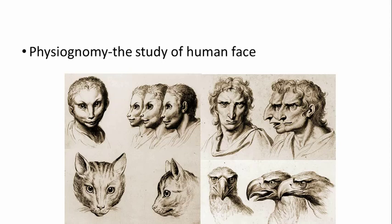Physiognomy is the study of the human face. Every face is different, and as we have evolved — if you've studied Darwin's theory — you'd know how evolution has happened. The study of the human face is very important to understand mutation and how it works. Physiognomy comes with the study of physical structure.